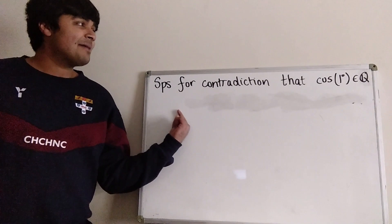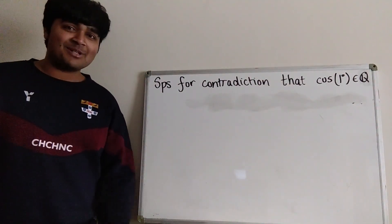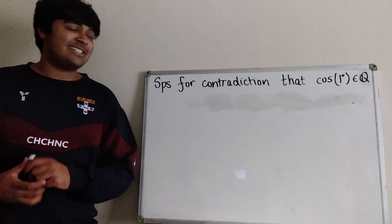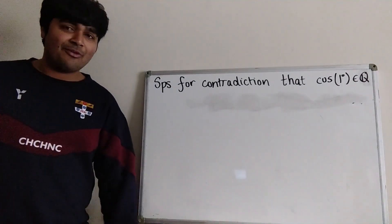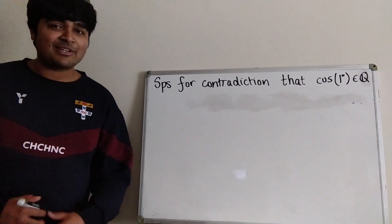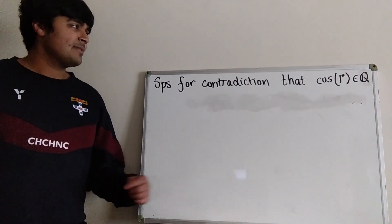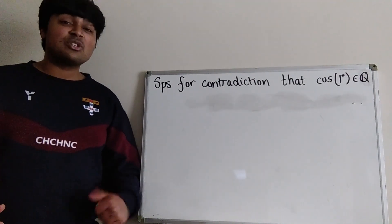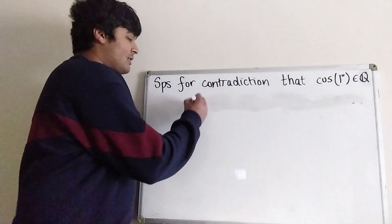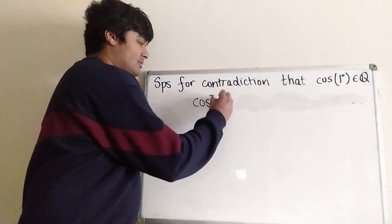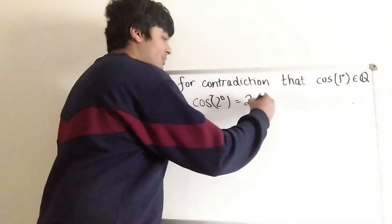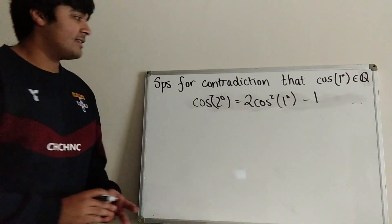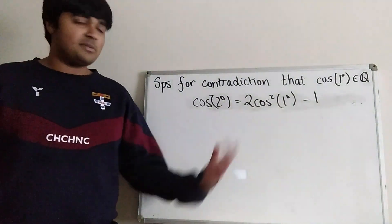Let's start off with perhaps the most obvious thing we can do if we're starting by contradiction: suppose for contradiction that cosine of one degree is rational. Then we're going to do some stuff and hopefully arrive at a contradiction, which will tell us that cosine of one degree is irrational. So we have cosine of one degree is rational. What we can do straight away is use our double angle formula to get cosine of two degrees, which is just two times cosine squared of one degree minus one. This follows from the double angle formula.